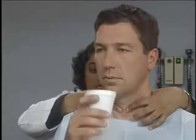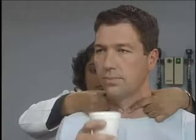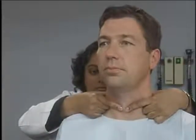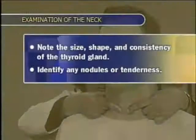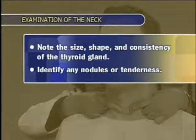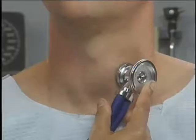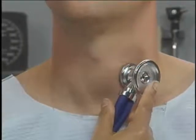Ask the patient to take a sip of water and then swallow. Feel for the thyroid isthmus rising under your finger pads. Note the size, shape, and consistency of the thyroid gland, and identify any nodules or tenderness. If the thyroid gland is enlarged, listen over the lateral lobes with a stethoscope to detect a bruit — a sound similar to a cardiac murmur but of non-cardiac origin.